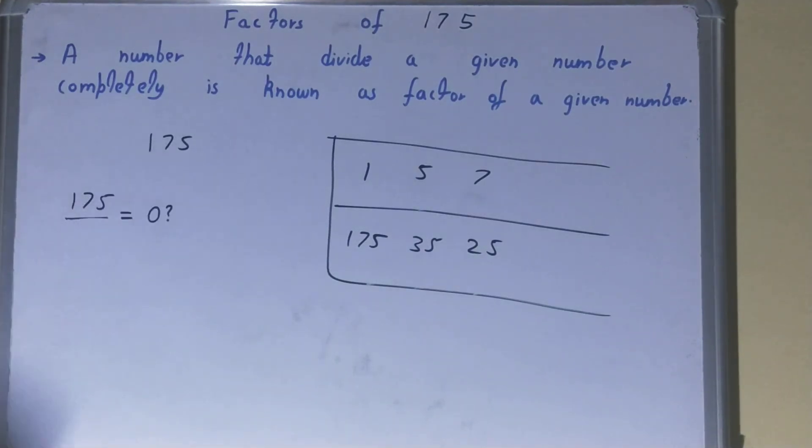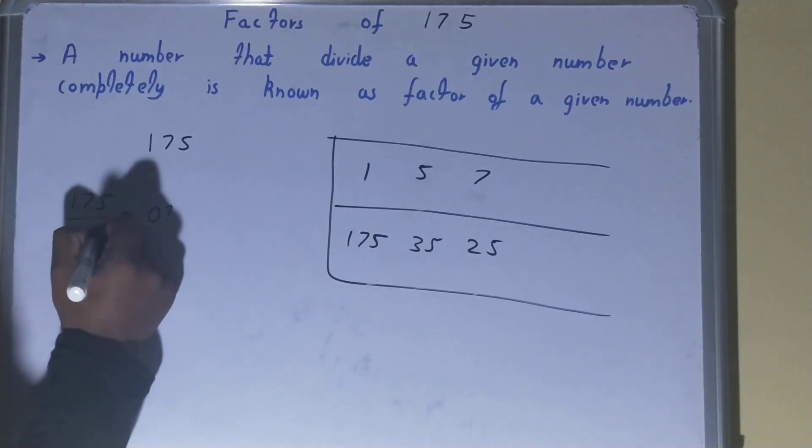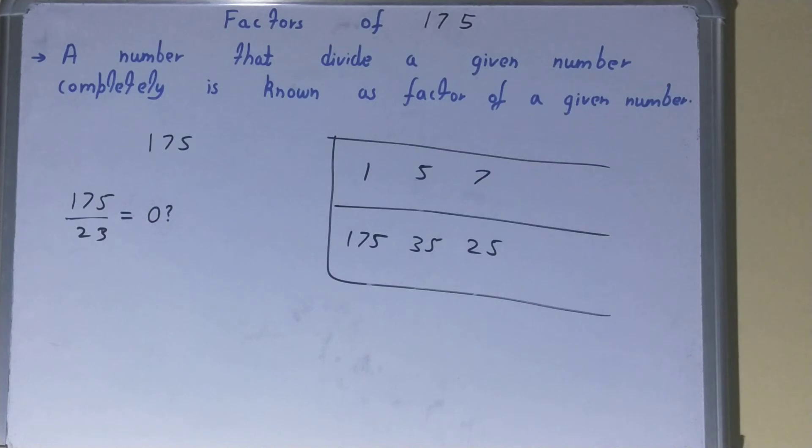19... 19 times 9 is 171, not divisible. 21... 21 times 9 is 189... 21 times 8 is... no, it is not divisible. 23... 23 times 8... tens are 160... 23 times 8 is 184.